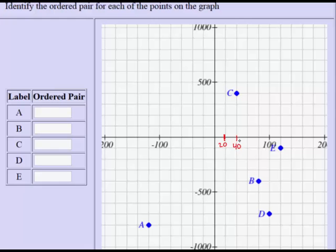This would be 20. This would be 40. Continuing to count by 20s, this would be 60. And finally, this would be 80.